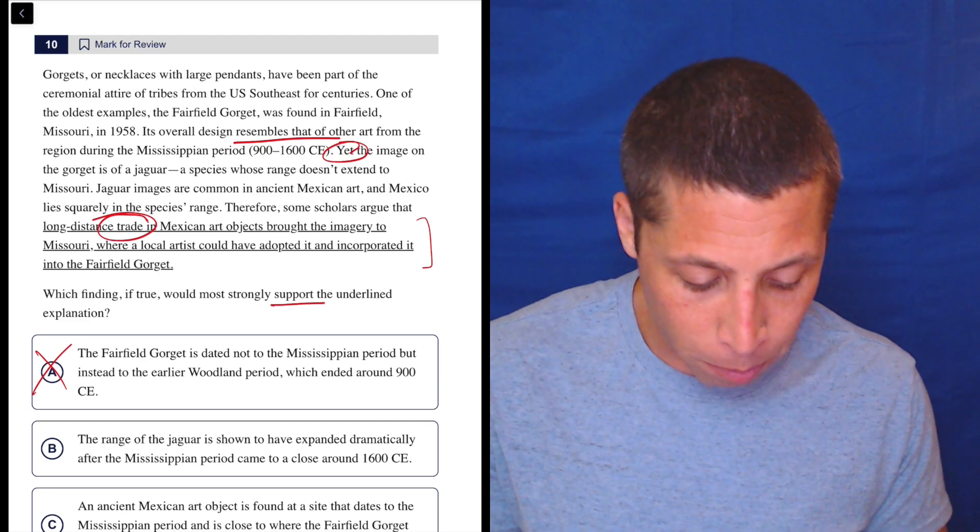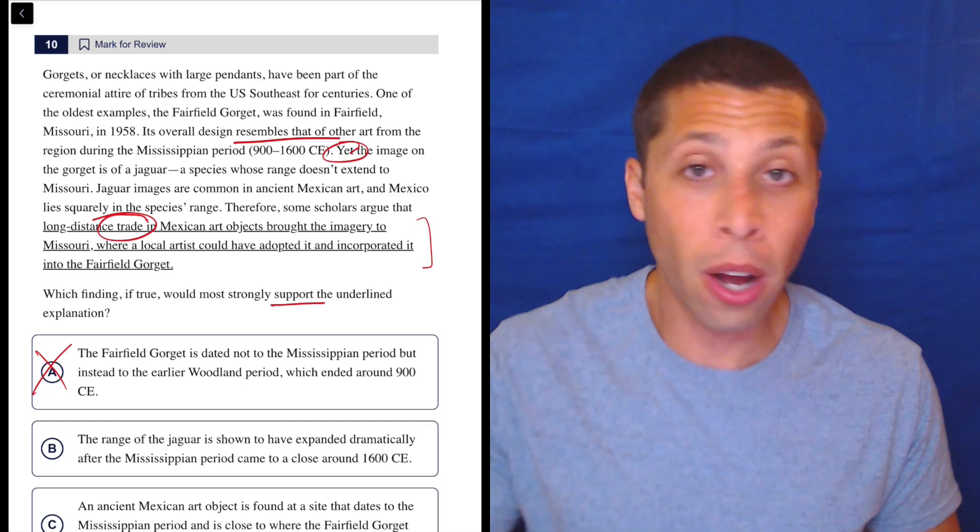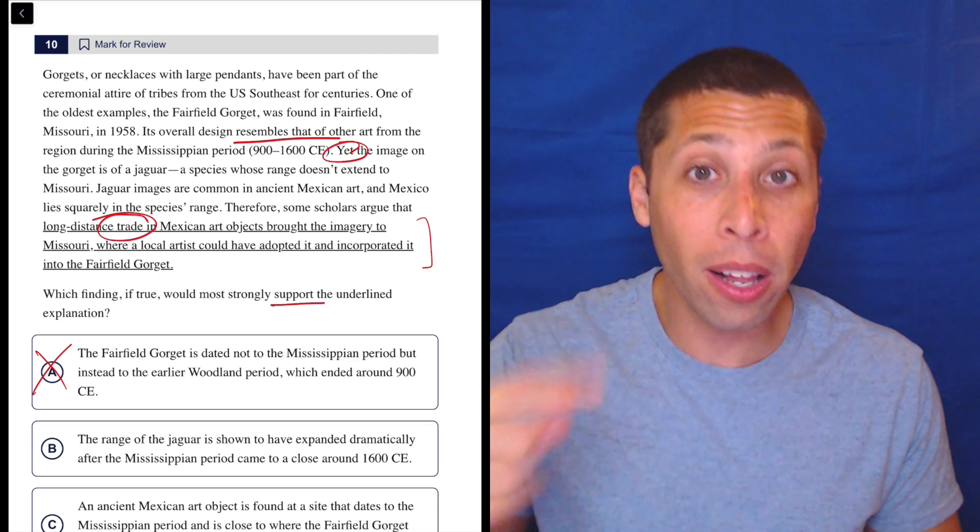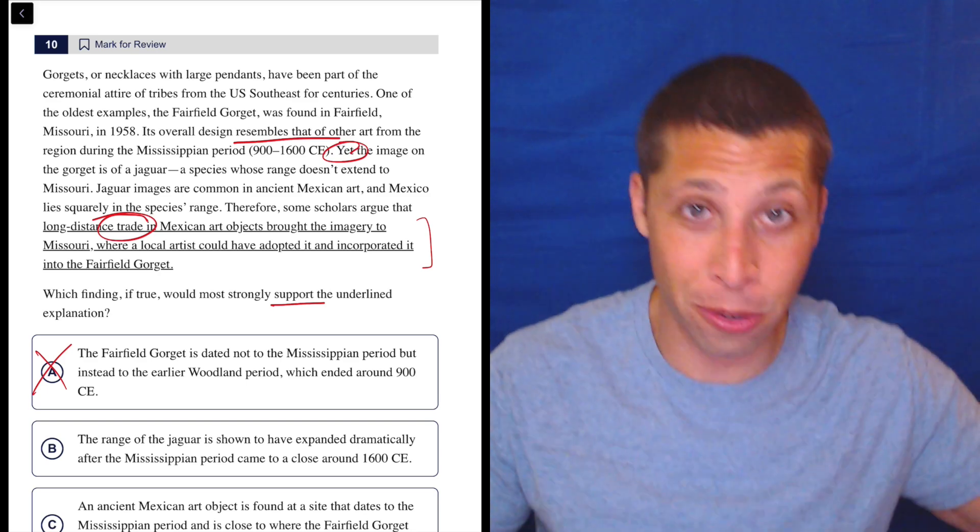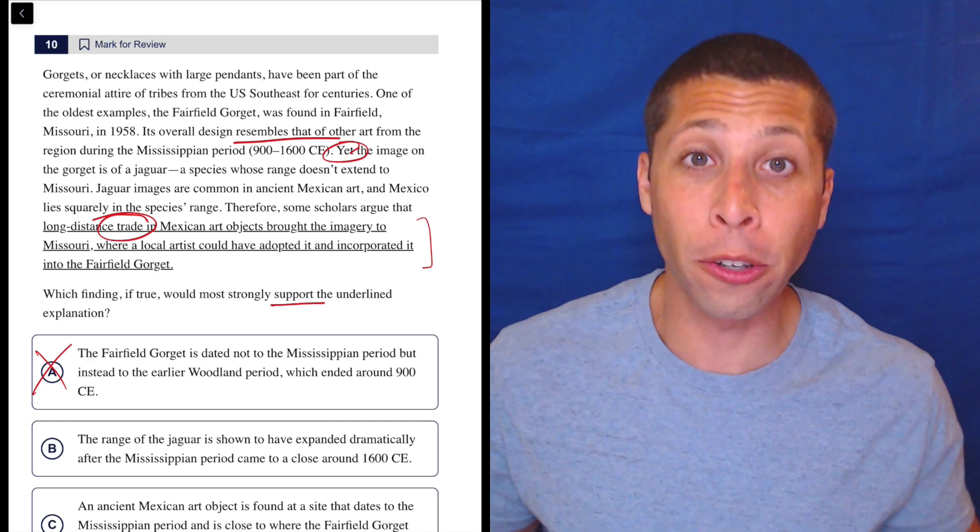B, the range of the jaguar is shown to have expanded dramatically after the Mississippian period came to a close around 1600. No. Now this is tempting because you're like, well, if the jaguar was in Missouri, then it would make sense that they knew what a jaguar was and put it on their jewelry.